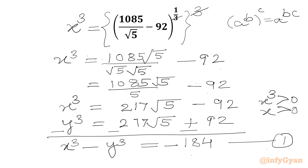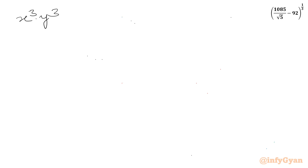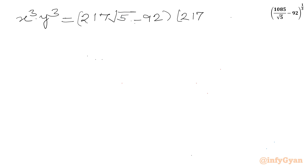Now I will take the product of the two expressions. So x cubed times y cubed equals (217 root 5 minus 92) times (217 root 5 plus 92). This is of the form (a minus b)(a plus b), so we can apply the difference of two squares formula.